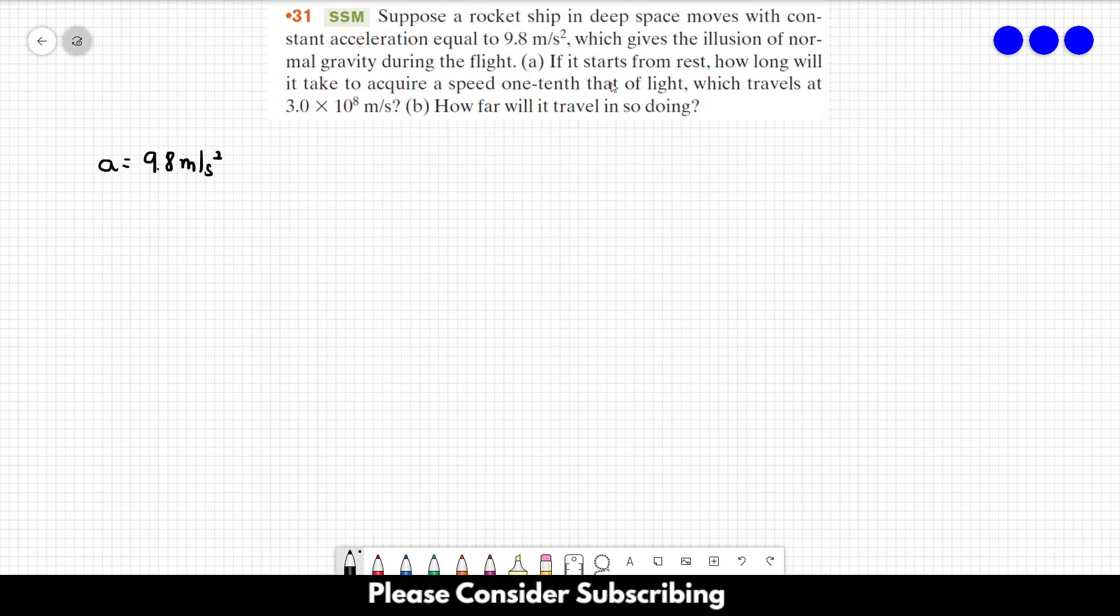Part A: If it starts from rest, so the initial speed is zero, how long will it take to acquire a speed of one-tenth that of light? So the final speed is the speed of light over 10.